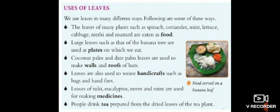There are many uses of leaves. Leaves of many plants such as spinach, coriander, mint, lettuce, cabbage, methi, and mustard are used for eating as food. We eat leaves as green leafy vegetables — spinach (palak), coriander, mint, curry leaves, cabbage, methi, and mustard are some of the leaves we eat.